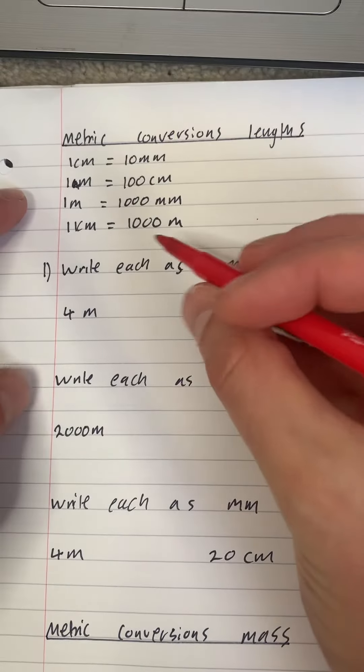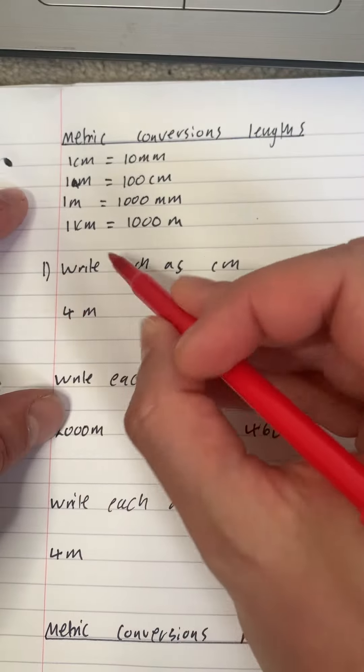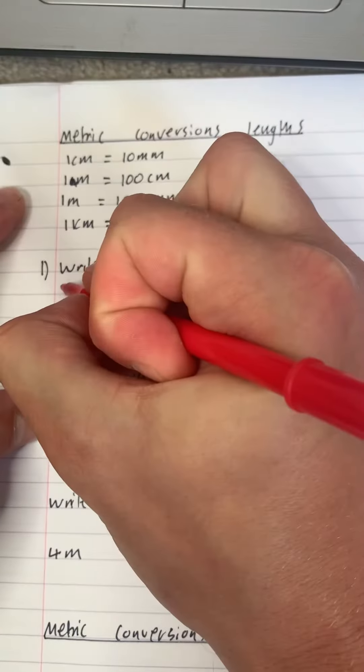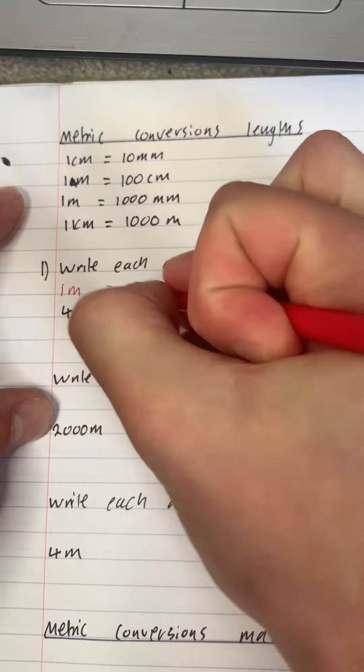So let's write each as centimeters. What we do is we find the one that's got meters and centimeters, which is here. So I'm going to put it the other way around. We've got one meter is 100 centimeters.